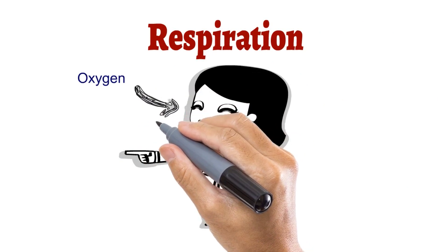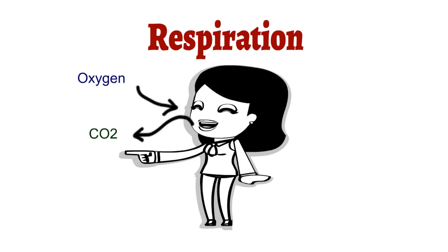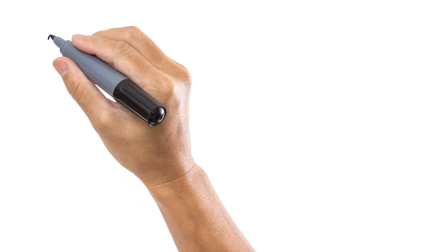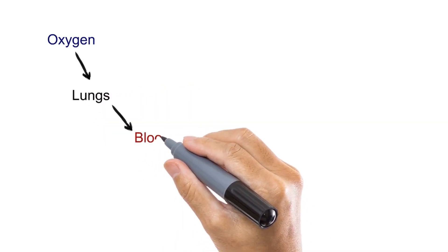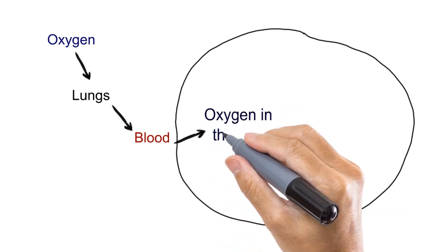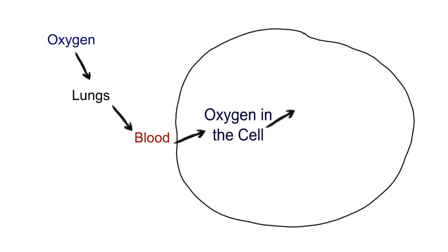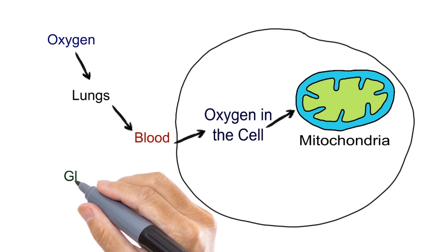In school we learned that intake of oxygen and release of CO2 is called respiration, but this is only half true. We keep breathing till the end of our life. When we inhale, oxygen is transferred to the lungs, then enters the blood, and is carried to each and every cell with the help of hemoglobin present inside the RBCs.